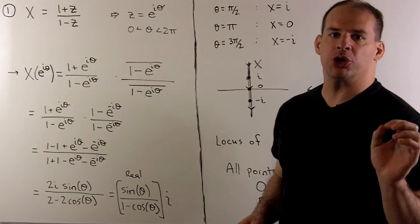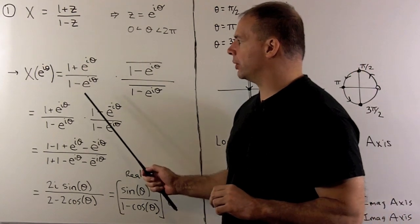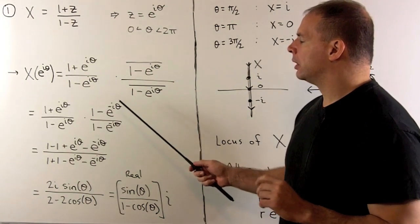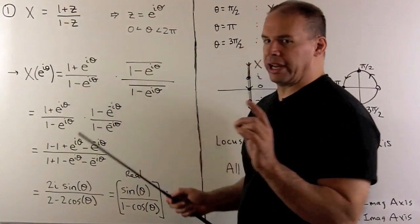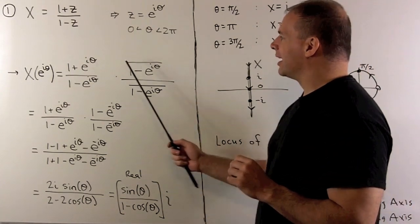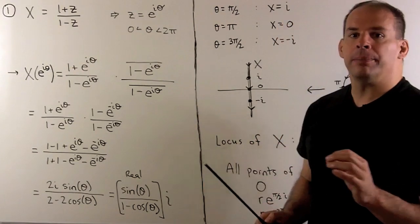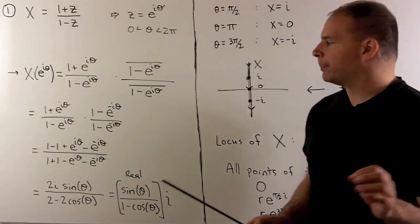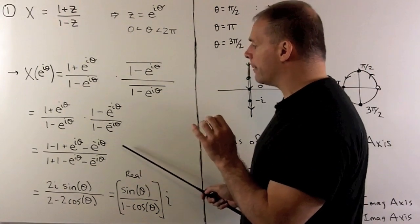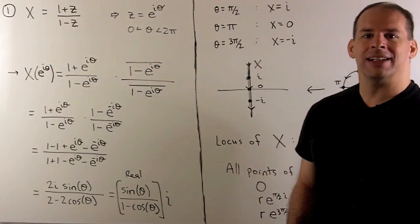Next, let's substitute our parametrization into x. We'll have x equal to 1 plus e to the i theta over 1 minus e to the i theta. I want to make the denominator real, so we multiply by 1 minus e to the i theta conjugate over itself. The e to the i theta conjugate goes to e to the minus i theta. Then we can just multiply out, apply Euler's formula. Then we'll have sine of theta over 1 minus cosine theta times i.